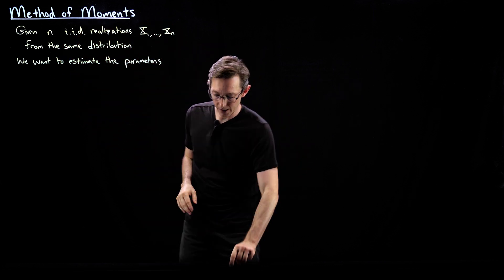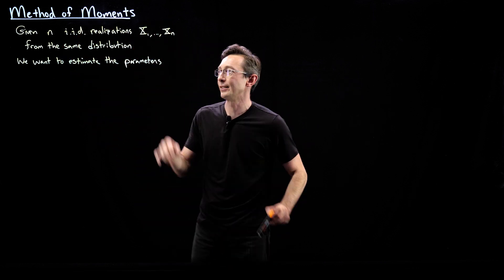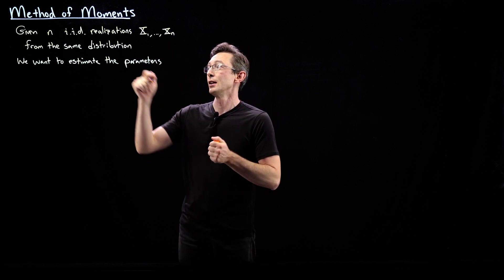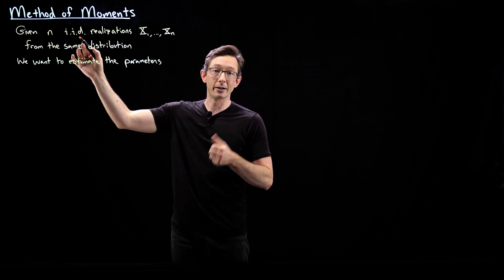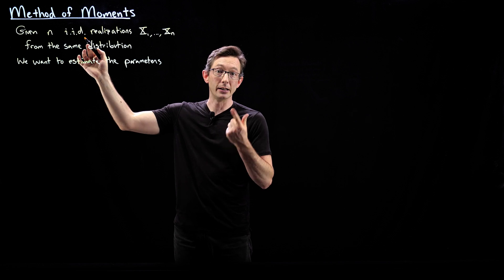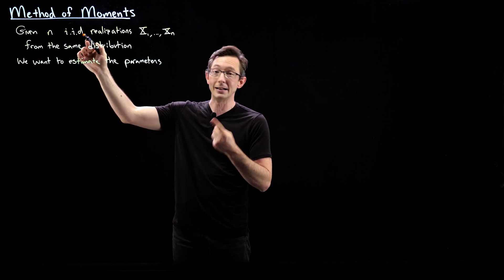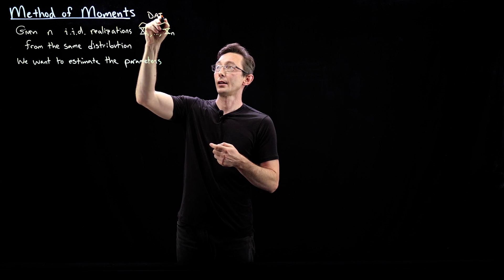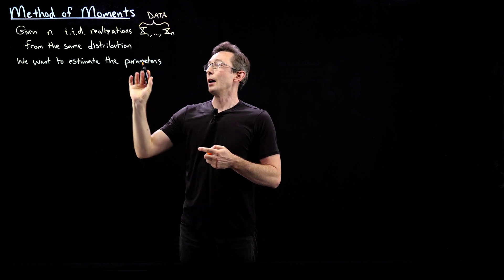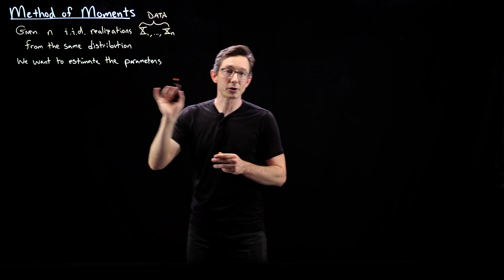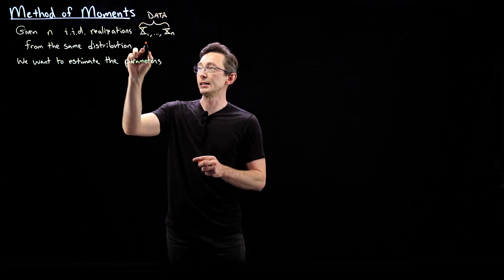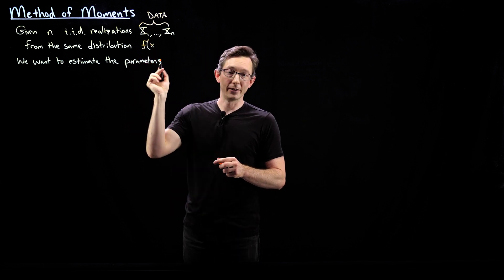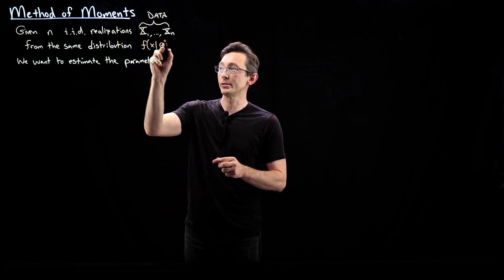Given some data — measurements of a system — these are random variables that are IID: independent, identically distributed data. Let's say they come from the same distribution, so that distribution is some probability density of my variables given some parameters theta.